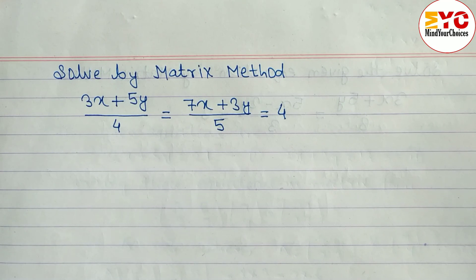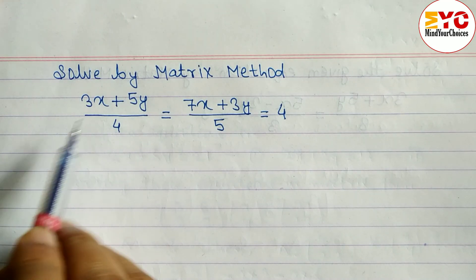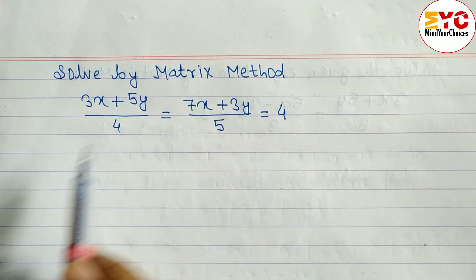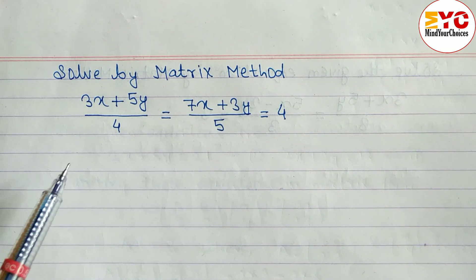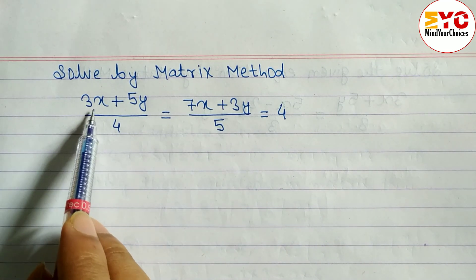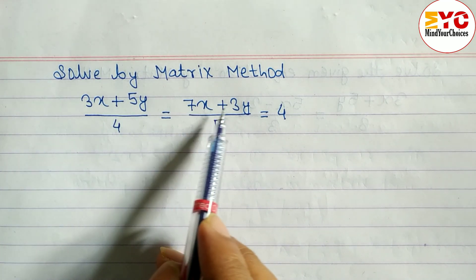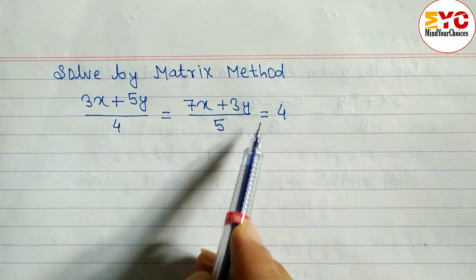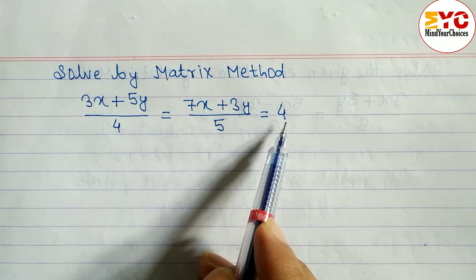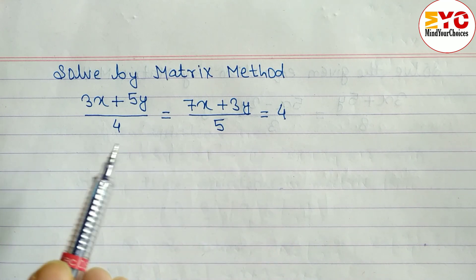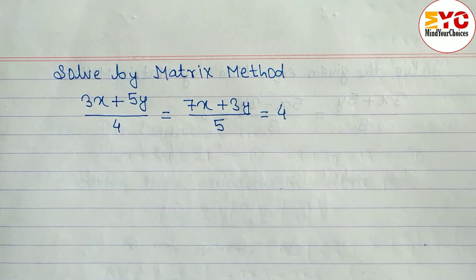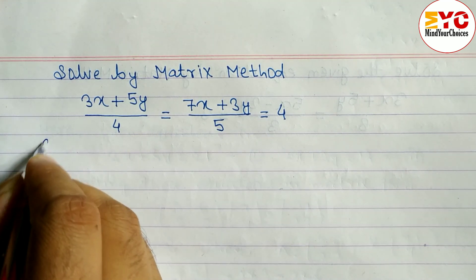Hello everyone, welcome to my channel. Today we have a question we have to solve by matrix method. The question is: 3x + 5y/4 = 7x + 3y/5 = 4. This is a little bit different type of question, let's get started.